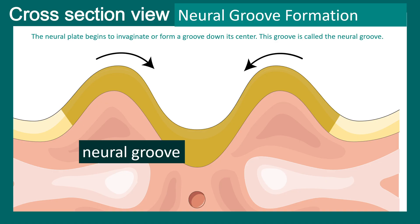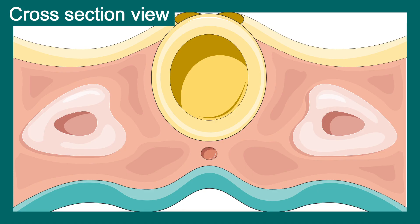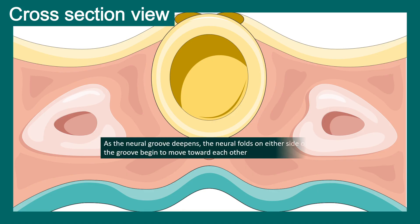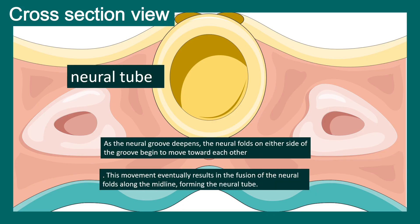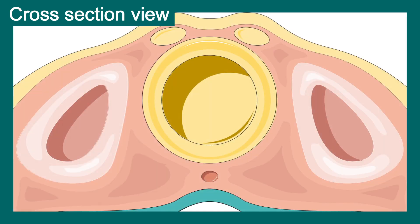Eventually, the two sides of this neural groove would come closer and closer until they fuse together to form the neural tube. The neural tube formation is almost done, and at around day 28, this should be complete.